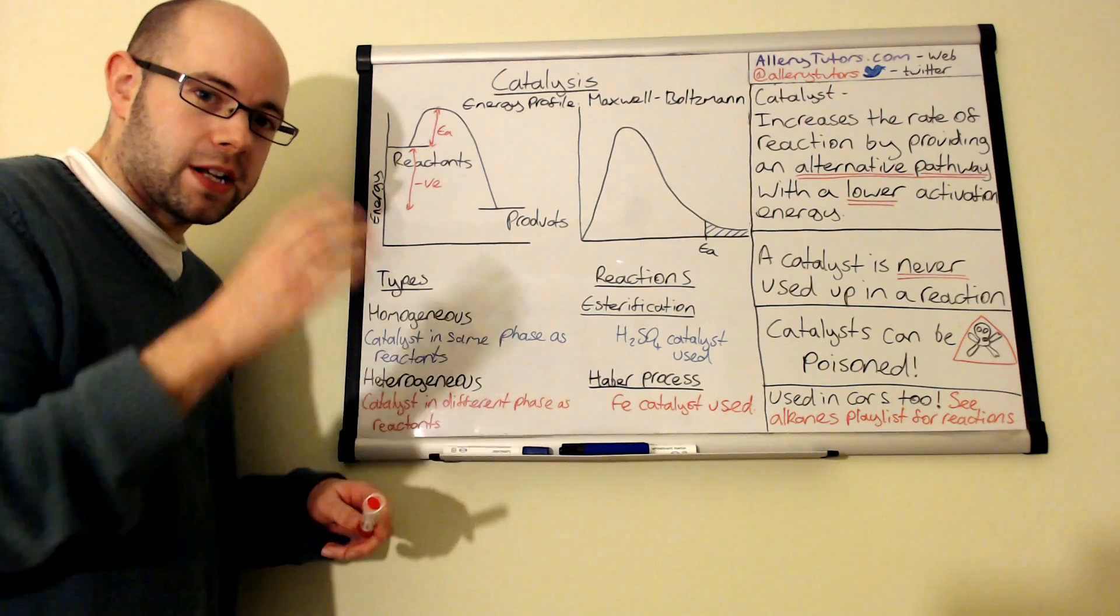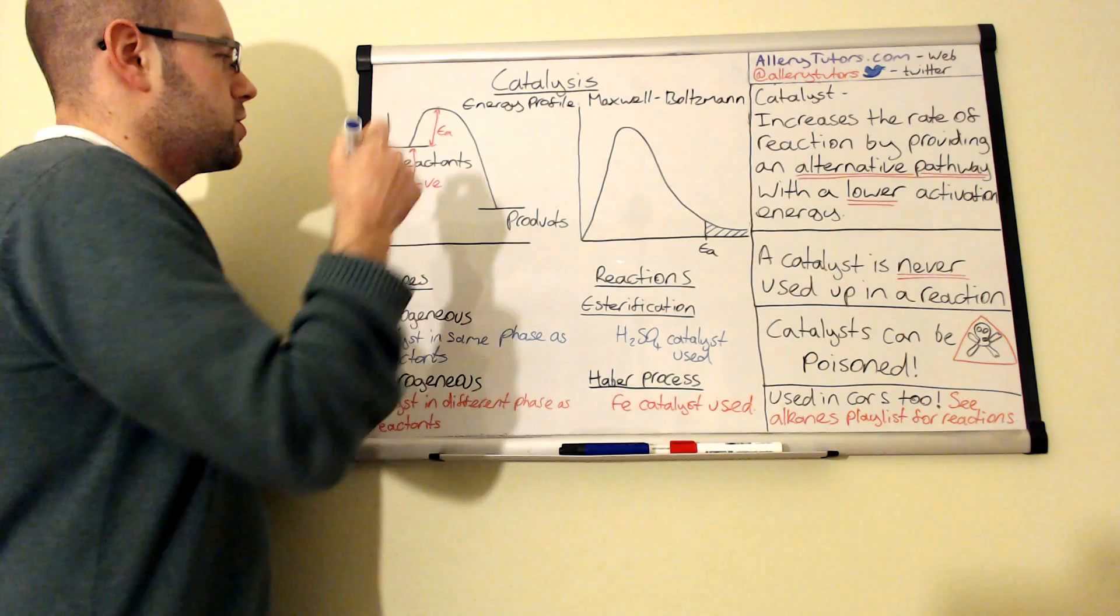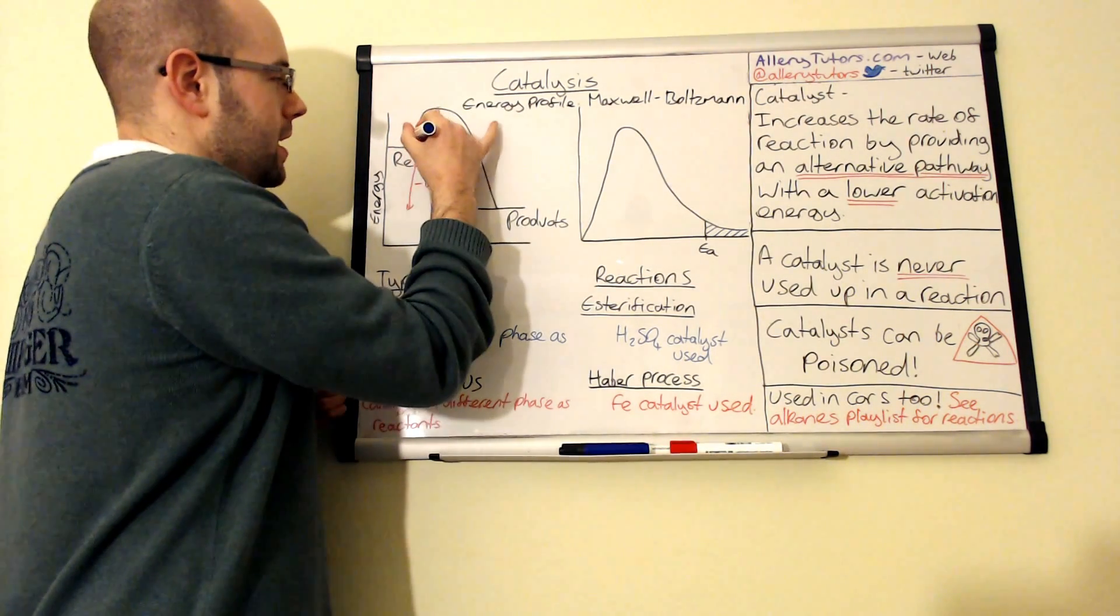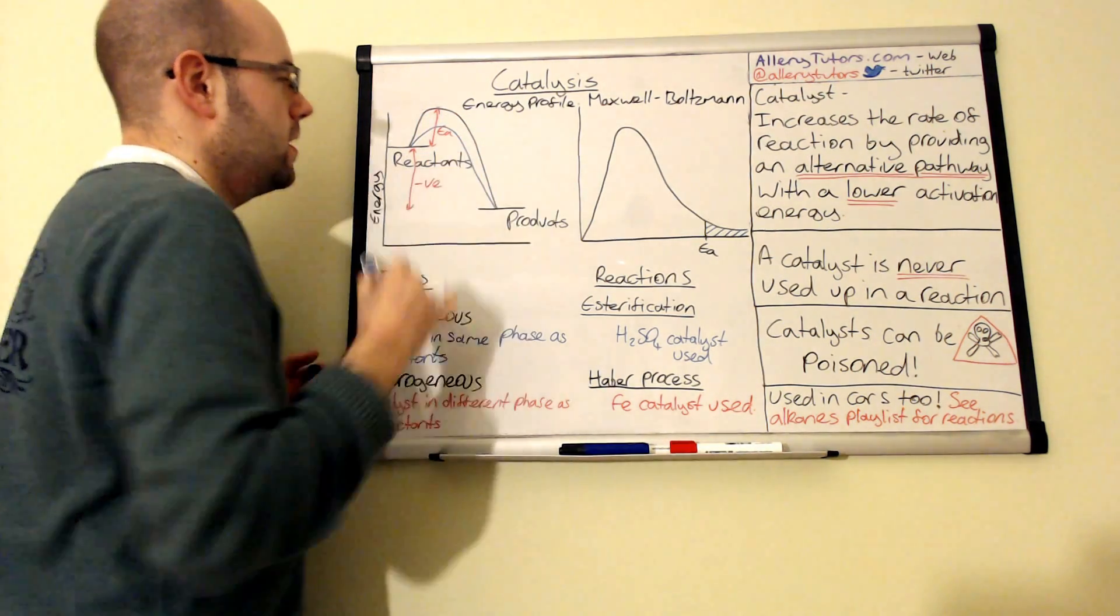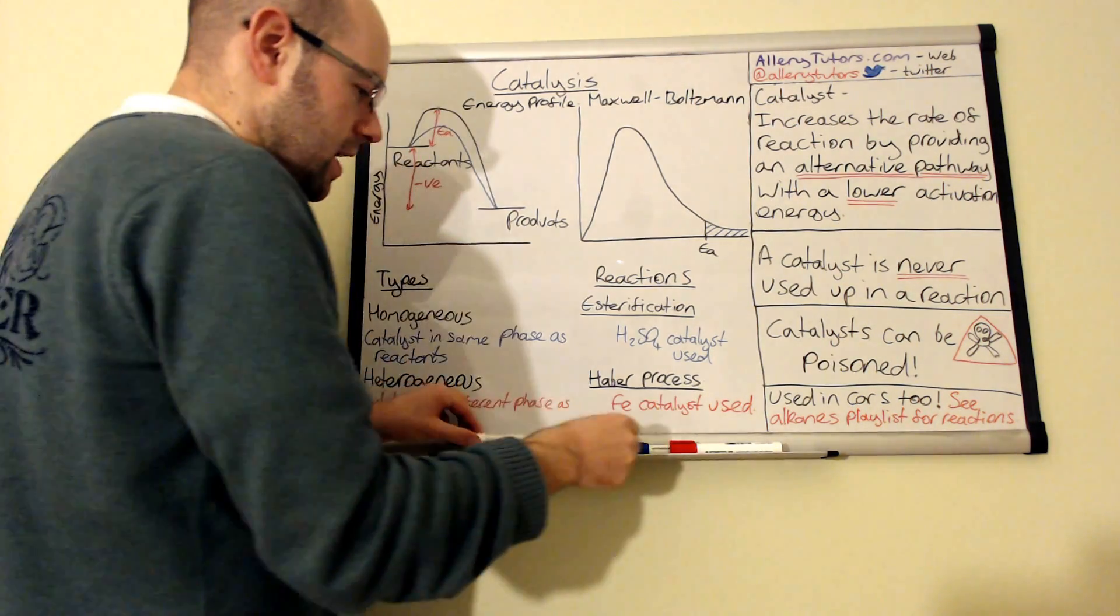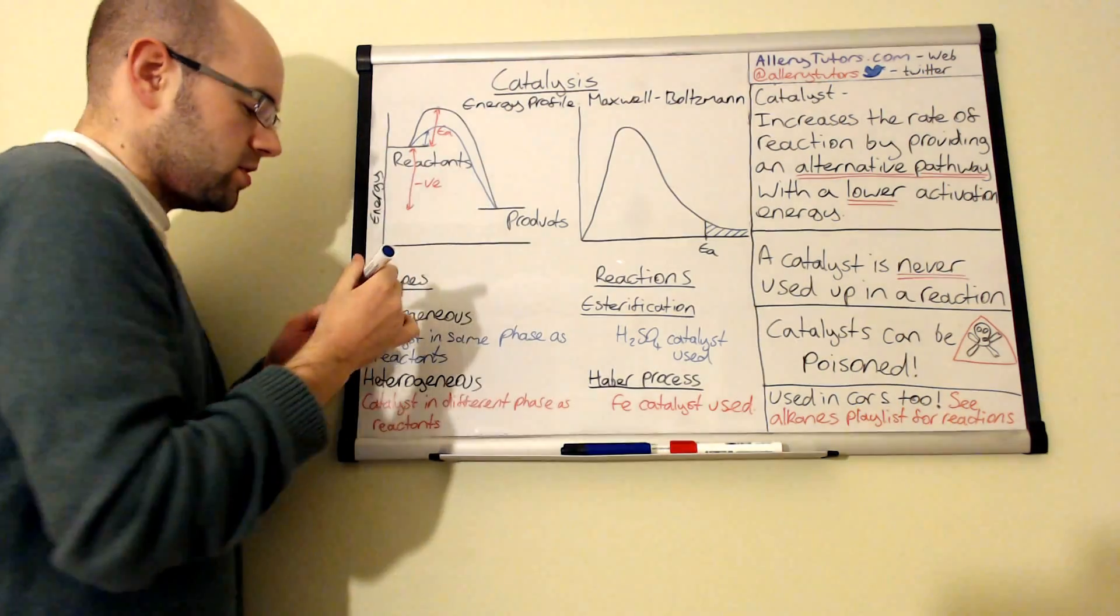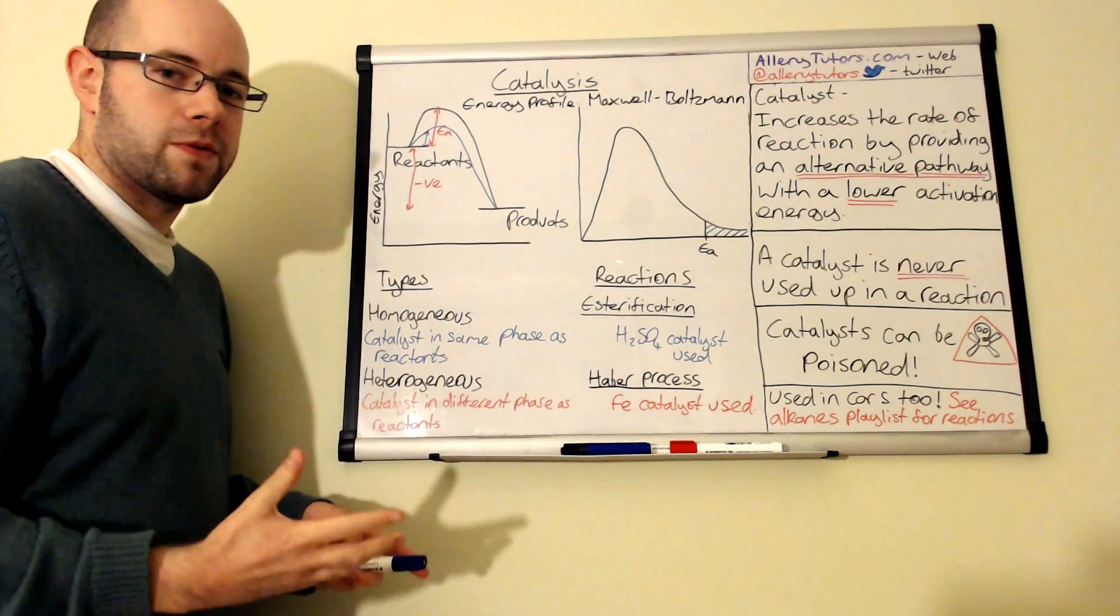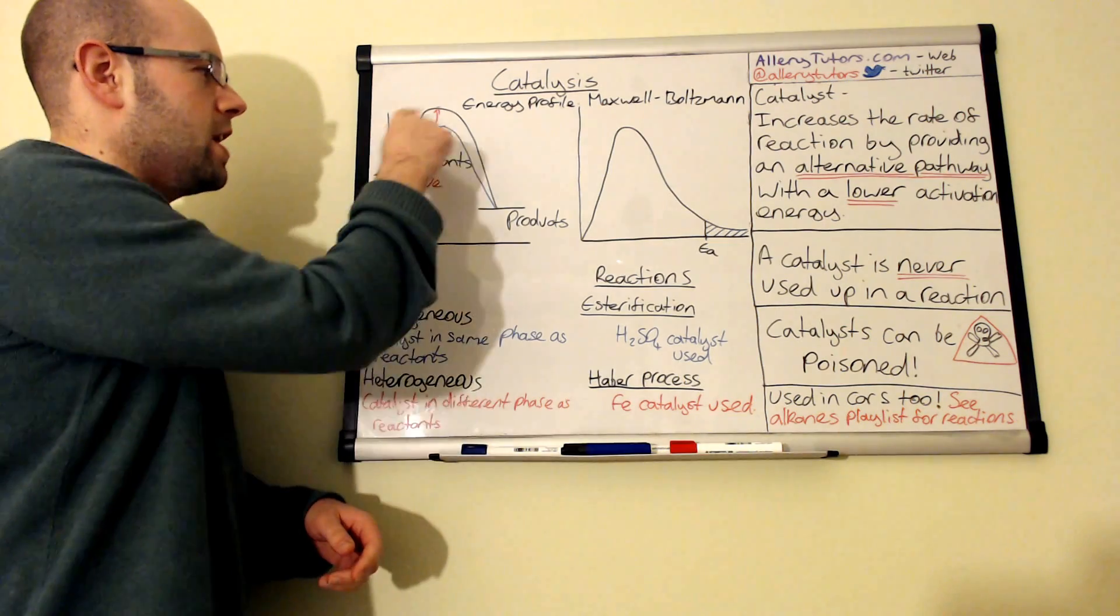With a catalyst, if we add a catalyst to this reaction, we actually lower the activation energy. I'm going to draw this in a blue line so you can see that a catalyst will follow this pathway instead. You can see that the activation energy between there and there is actually reduced—it's smaller, and that's effectively what a catalyst does. It provides an alternative pathway for the reaction to proceed by lowering the activation energy.